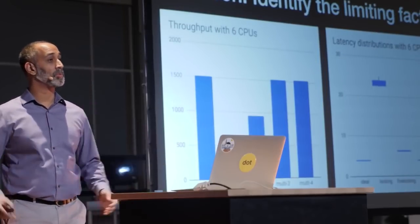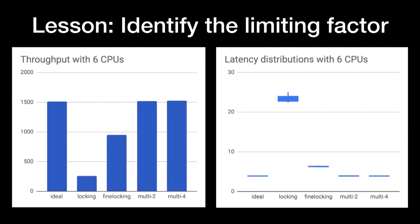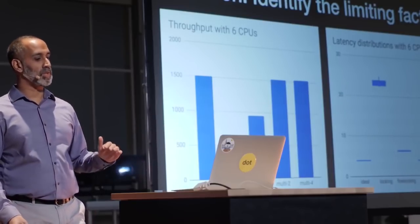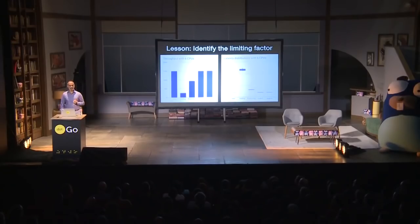Here's another way to compare the performance of the implementations we've seen so far. The chart on the left shows the throughput of each implementation when running with six CPUs; the chart on the right shows their latency distributions. Rectangles indicate the middle 50% of latencies, while the vertical lines indicate the middle 90%. The whole-kitchen locking scenario has a throughput of just 250 lattes per second, with latencies spanning 22 to 25 milliseconds. The fine-grained locking peaks at around 1,000 lattes per second due to the structural limits we saw earlier. With two of each machine we achieve ideal performance. Doubling again to four of each machine gains us nothing, because we've maxed out our six CPUs — the CPUs are now the limiting factor.